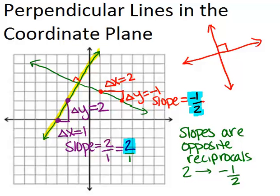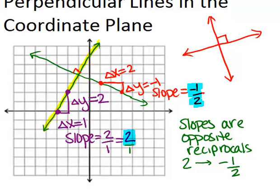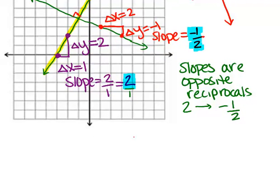This means if you know the slope of one line, you can always figure out the slope of a line perpendicular to it by figuring out the opposite reciprocal. So for example, if we had a line that was a slope of 1, the perpendicular line to that line would have a slope of negative 1.